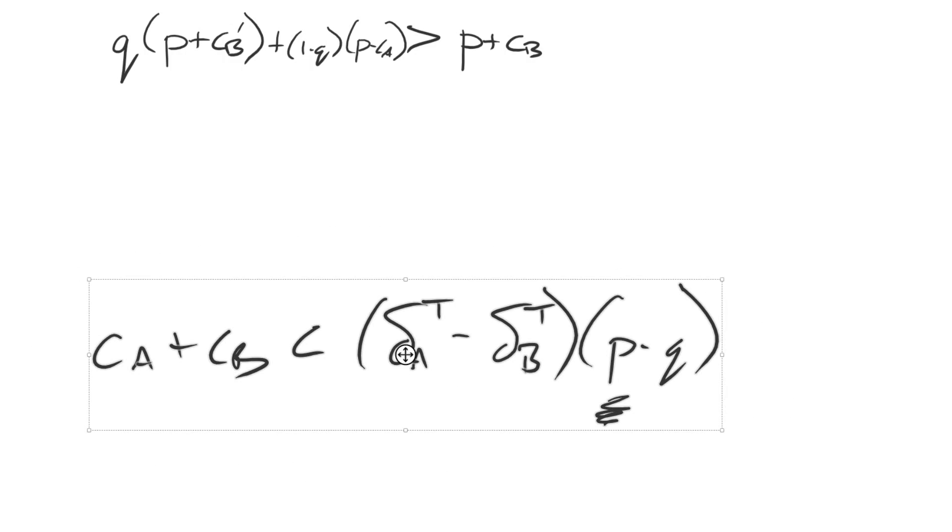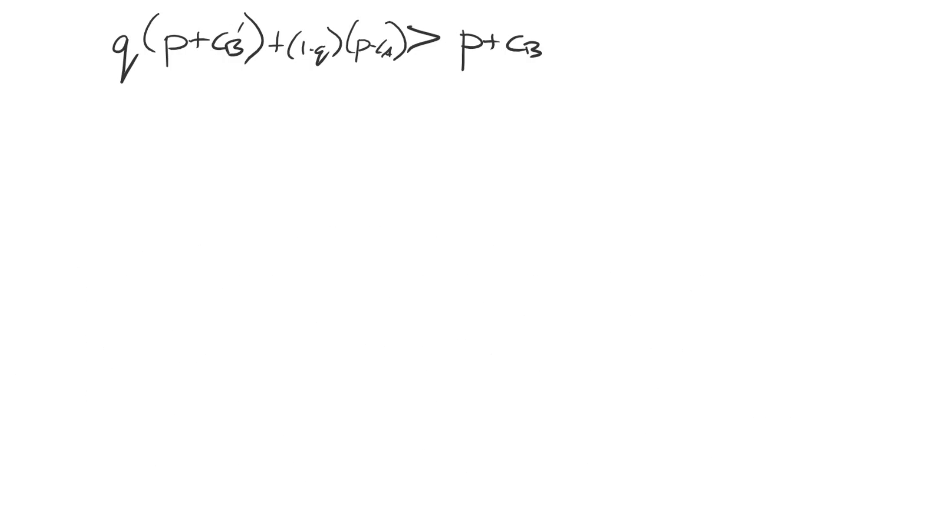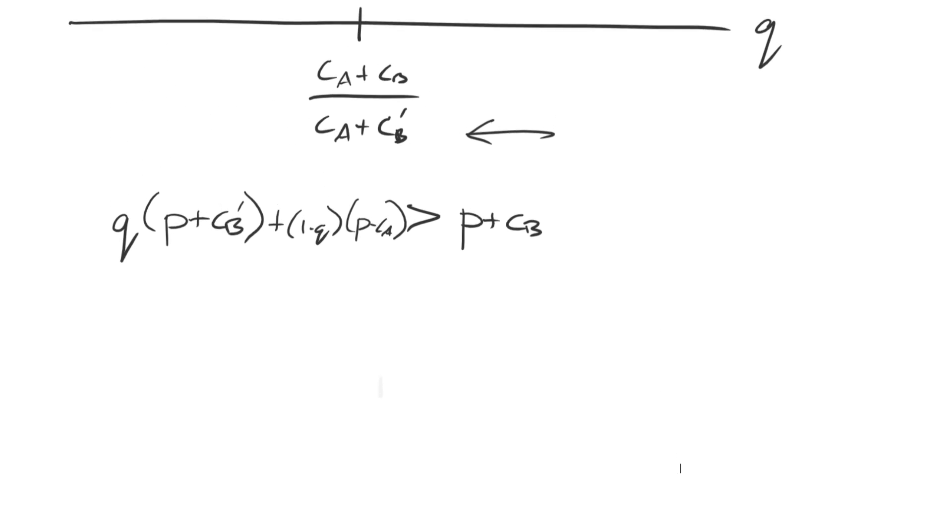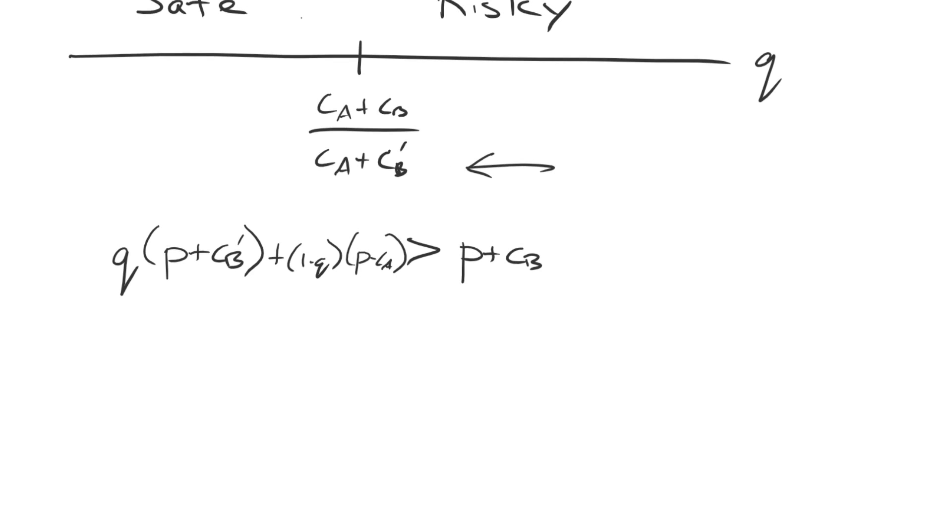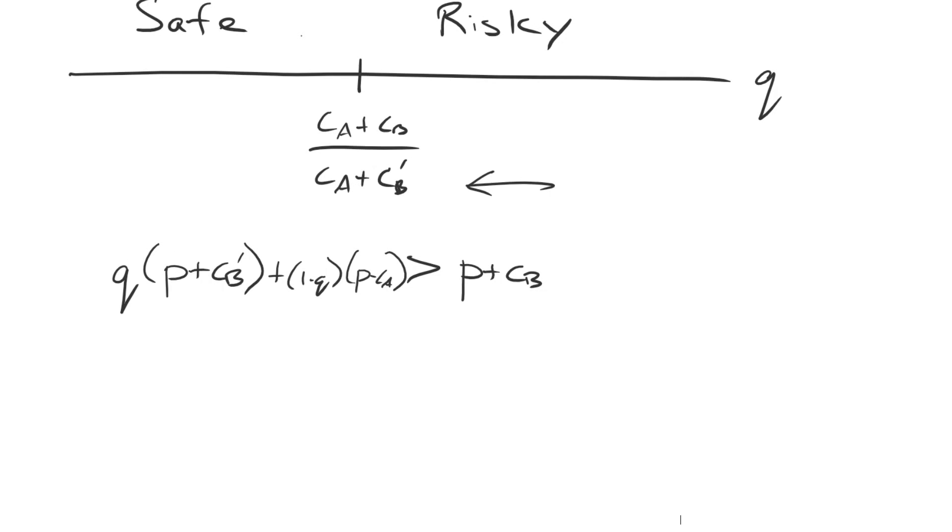So that's the obvious reason why the neutrality result doesn't always work. But even in this model that we were looking at before, where we have uncertainty over B's cost, the neutrality result only works under the assumption that the players have risk-neutral preferences.